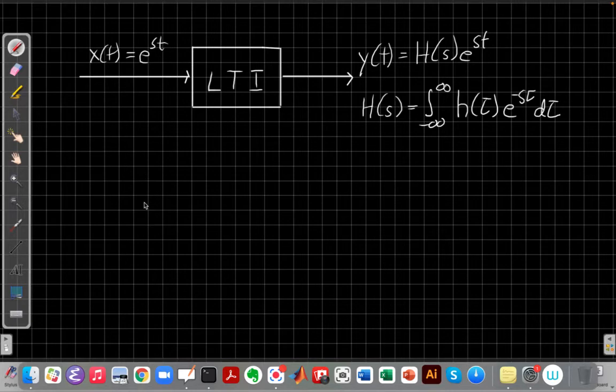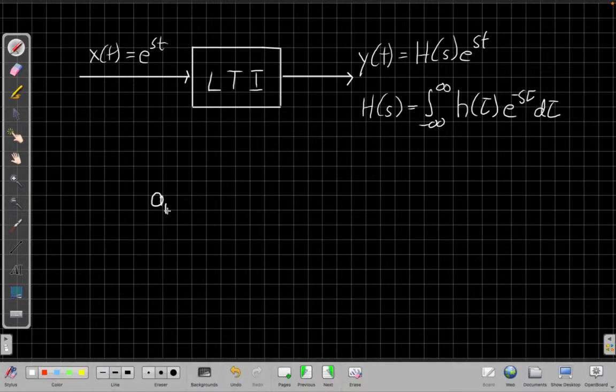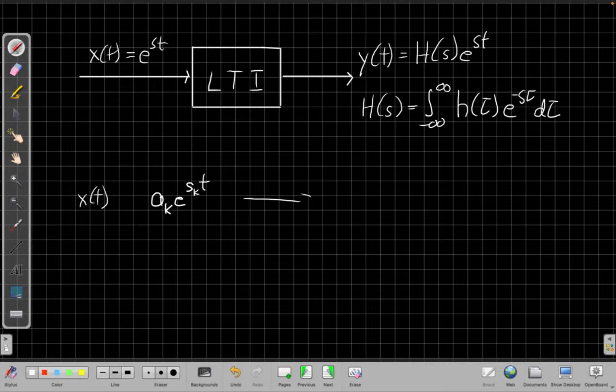So imagine, knowing the system is LTI, suppose I took that same input with e to the st. Maybe I'll say, well, I'm going to scale it by some constant a sub k for the choice s sub k, where s sub k is just a particular choice. If this is my input over here and I go through the system, my output, well, LTI says I just scale my output by the same thing as the input.